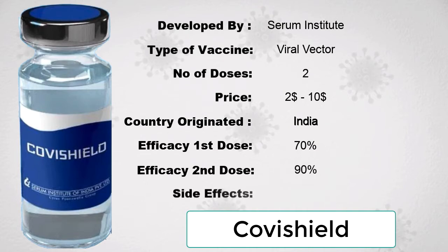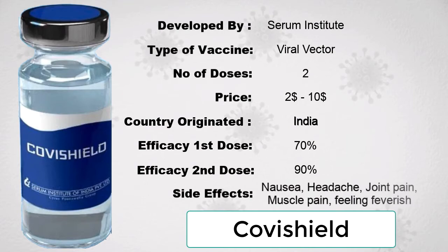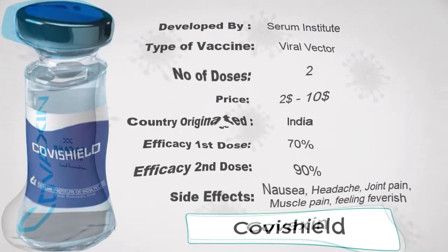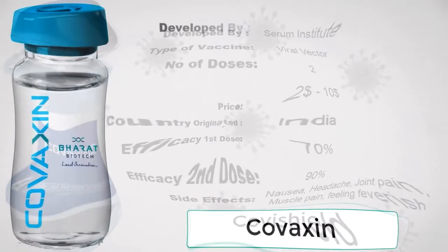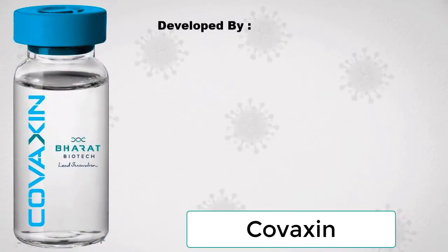The efficiency of the first dose of Covishield is near about 70% and the efficiency of the second dose is near about 90%. Its main side effects are nausea, headache, joint pain, muscle pain, and feverish.